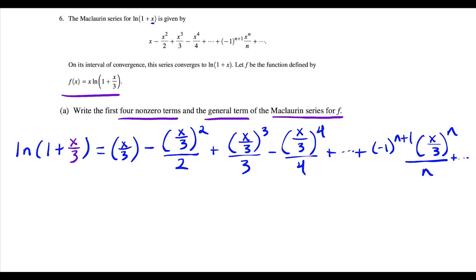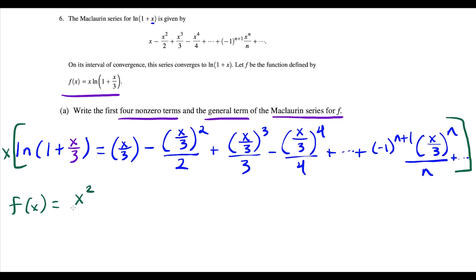So the next line here, what we need to do is to build f of x — we need to multiply everything here by x. So the next step would be to take this entire equation that we have and multiply everything by x. This tells us the Maclaurin series for f of x equals — well, x times x over 3 is going to make x squared over 3.